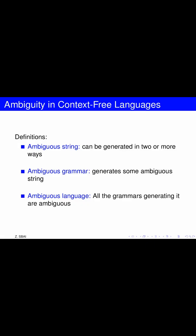Ambiguity in context-free languages refers to the fact that the language has a string that can be interpreted in different ways. So if you have a language that is context-free, there should be a context-free grammar for this language.